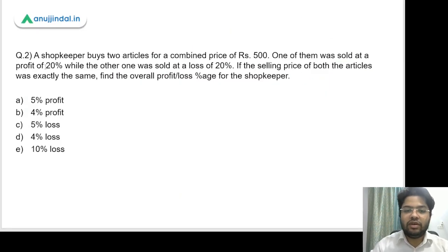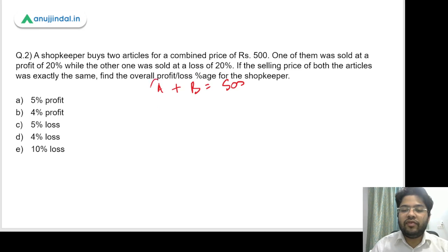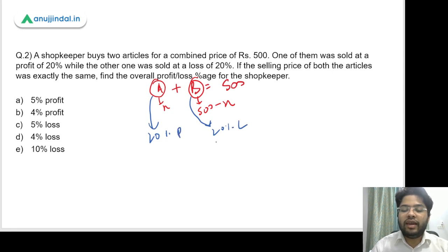Let's move on to question 2. A shopkeeper buys two articles for a combined price of rupees 500. One of them was sold at a profit of 20%, while the other was sold at a loss of 20%. If the selling price of both articles was exactly the same, find the overall profit or loss percentage. So let's say one article is A and the other is B. If the cost price of A is X, the cost price of B would be 500 minus X. So 120 by 100 into X equals 80 by 100 into 500 minus X.